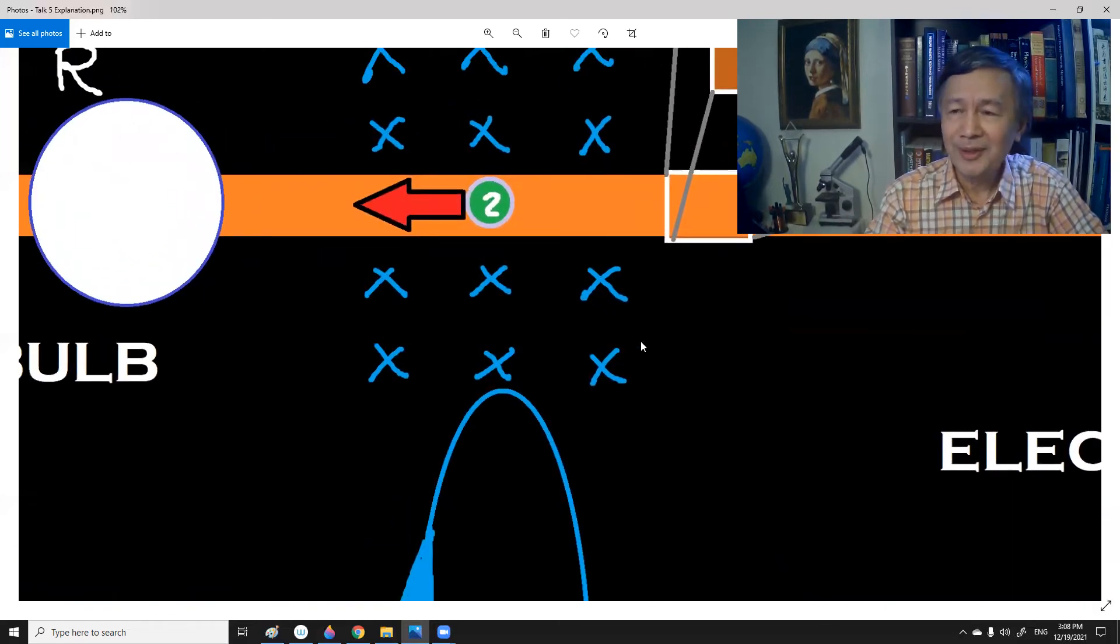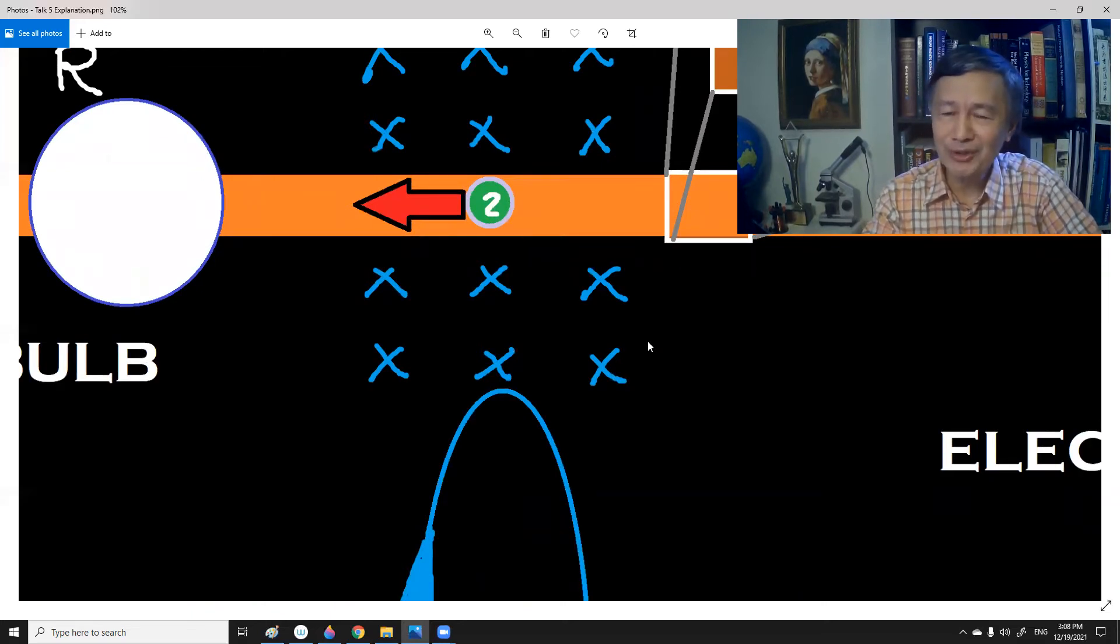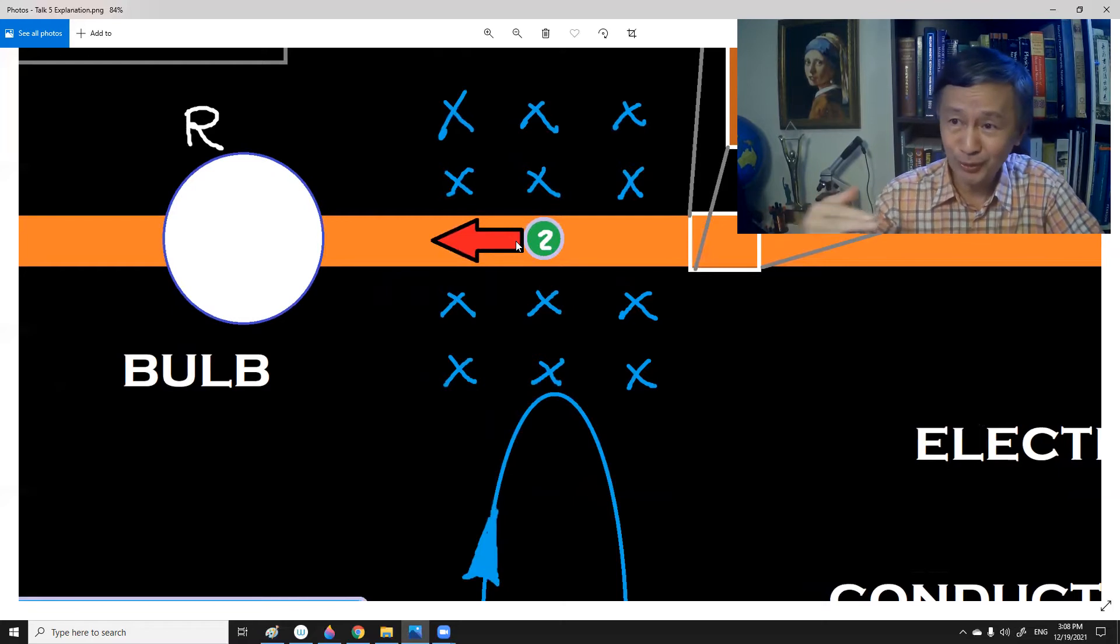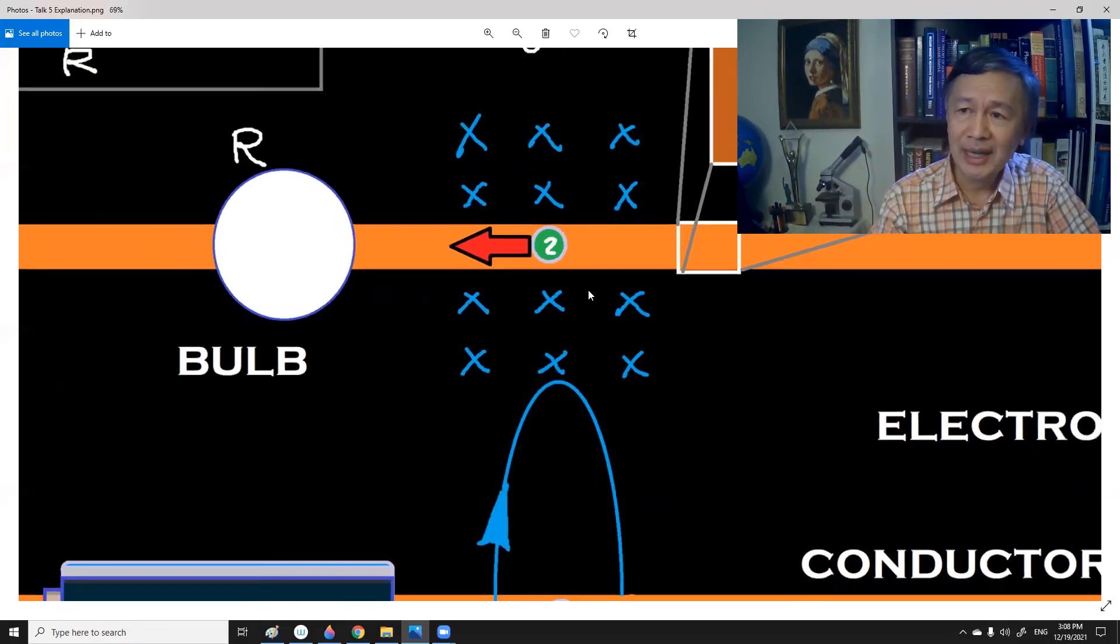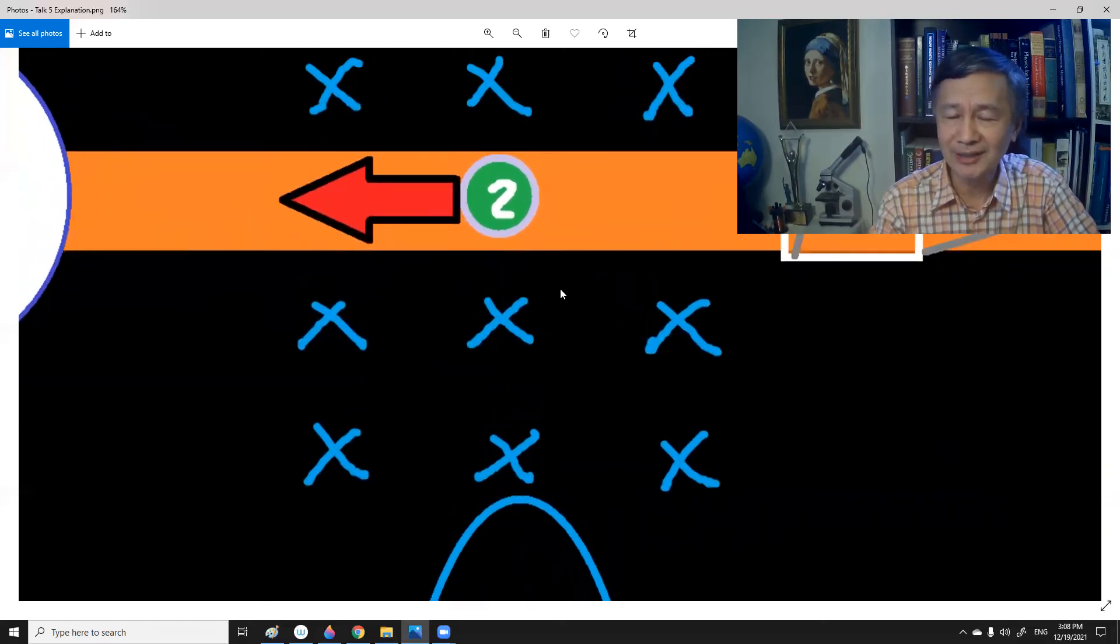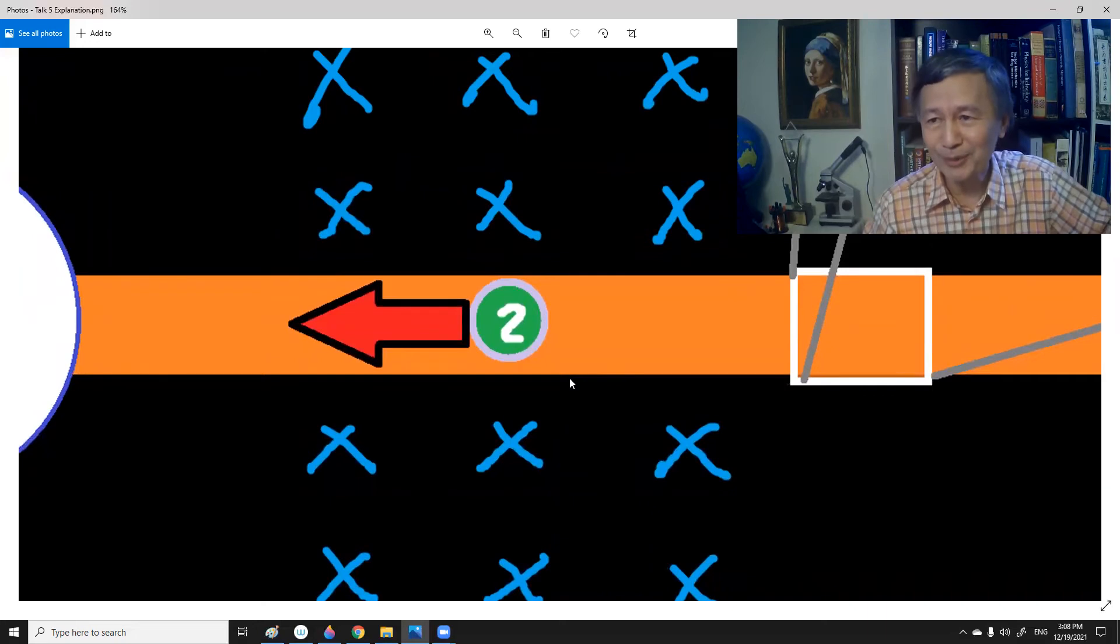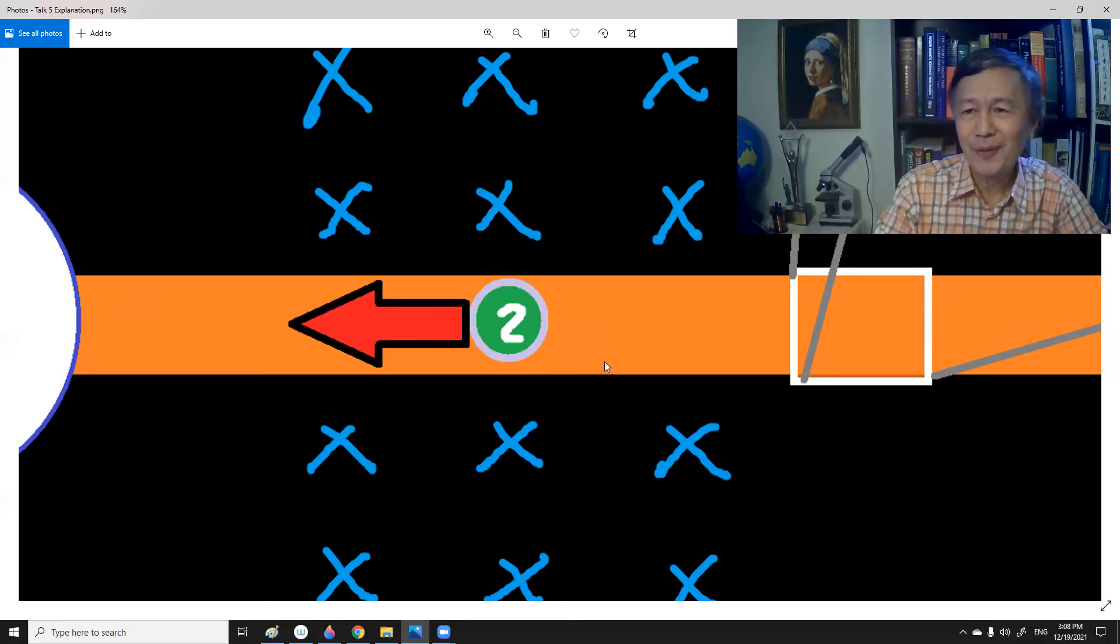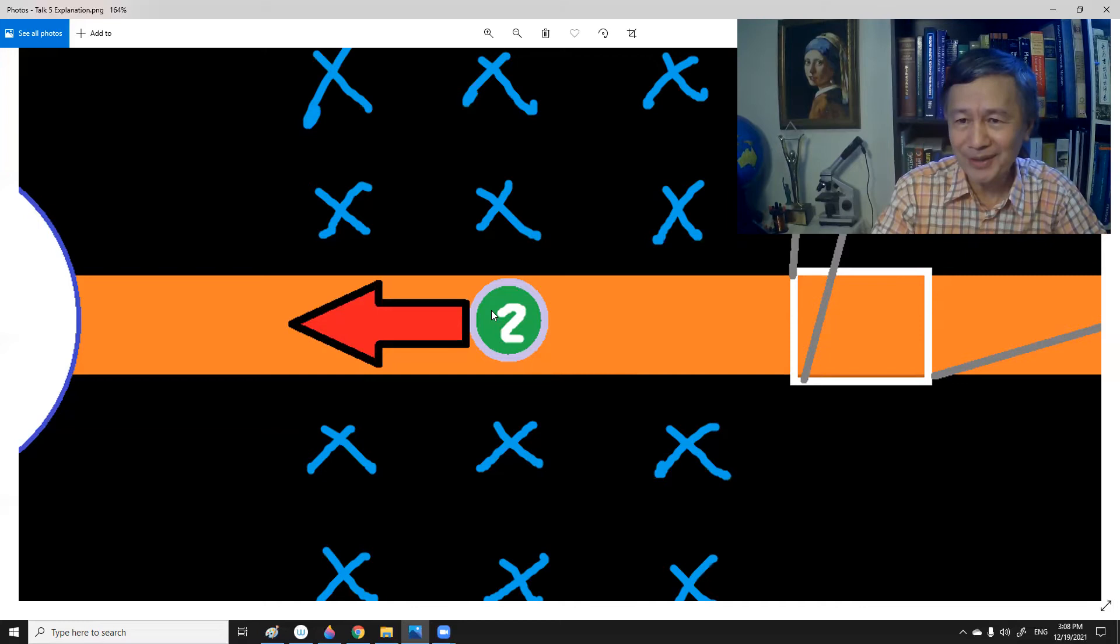The fact that experimental observations show that a certain amount of current was observed implies that electron two must move towards the bulb. Now, how can we explain the movement of electron two? If you just consider this electron is huge, like this one, you wouldn't be able to explain this phenomenon. However, we know that the size of the electron is very small. Therefore, this diagram is not realistic.